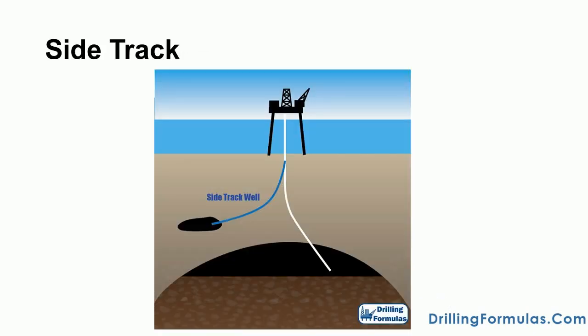Side track the well. It might be necessary sometimes to cement a well back to a shallower depth, and for a new wellbore to be drilled away from the original bore. This could be due to drilling problems, such as stuck pipe, or because an old producing well is to be sidetracked to a new location.